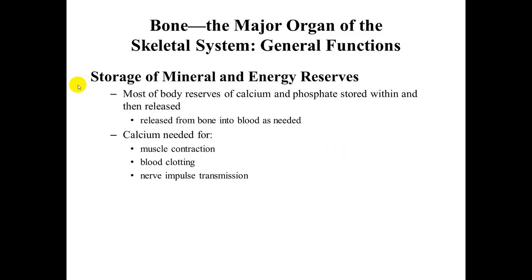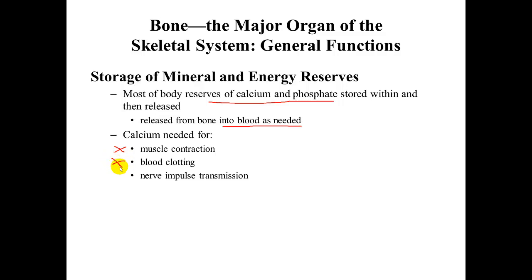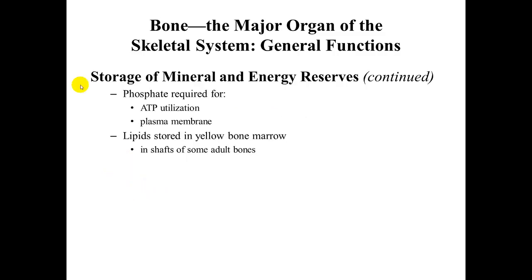Regarding the storage of mineral and energy reserves, most of the body's calcium and phosphate are stored within bones and released into the blood as needed — a negative feedback mechanism. Calcium is needed for muscle contraction in both skeletal and cardiac muscle, blood clotting through the extrinsic or intrinsic pathway, and nerve impulse transmission.